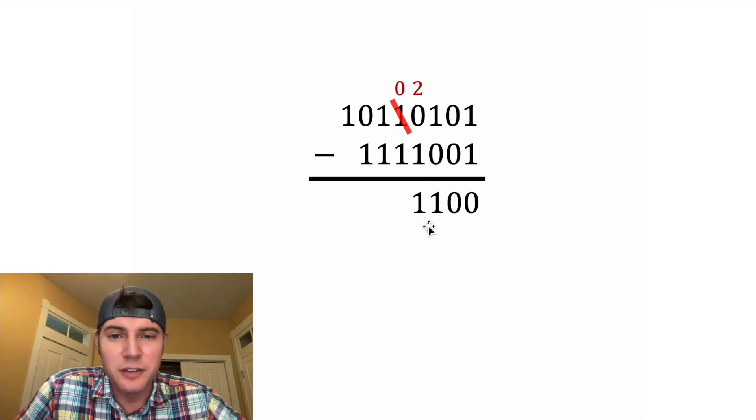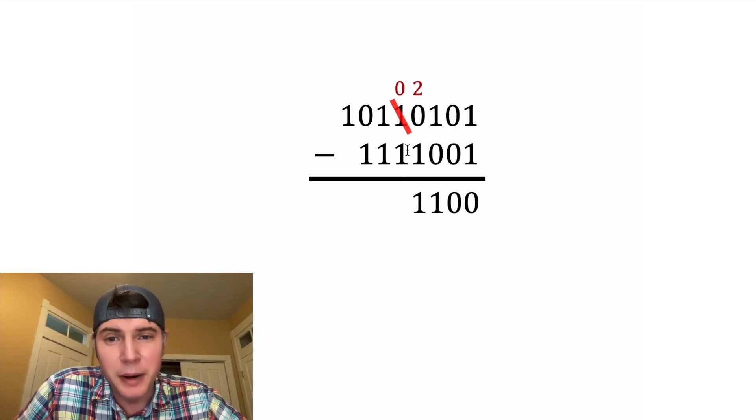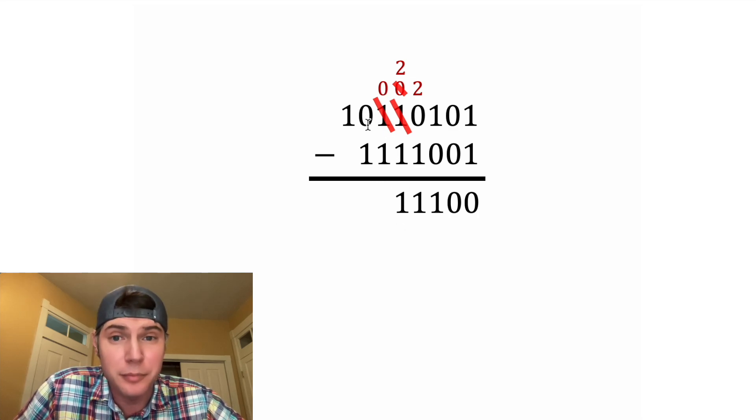And then 2 minus 1 gives us 1, and then we have another 0 minus 1, which we can't do, so we're going to borrow again and making this a 2. 2 minus 1 gives us 1, and then once again we can't do 0 minus 1, so we're going to have to borrow, but we can't borrow from here, we're going to have to borrow all the way from over here.